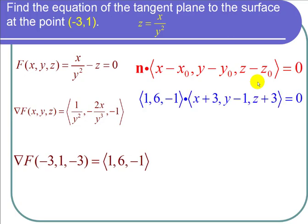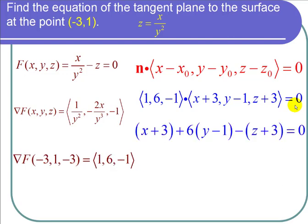So now I plug in. I get 1, 6, negative 1 dotted with x plus 3, y minus 1, z plus 3 equals zero. I take the dot product and I get x plus 3 plus 6 times y minus 1 minus z plus 3 equals zero.